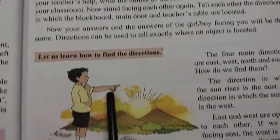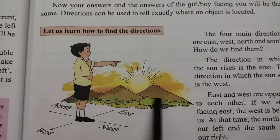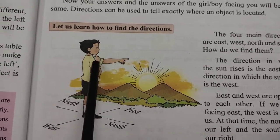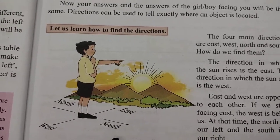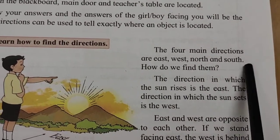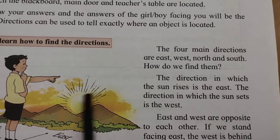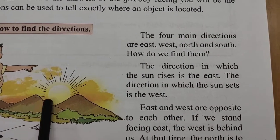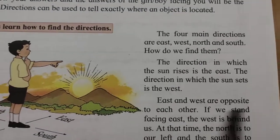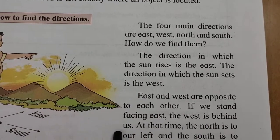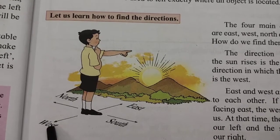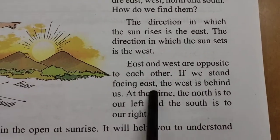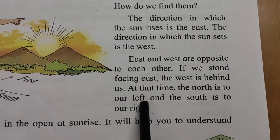In this picture, everybody knows that the Sun rises in the East and sets in the West. This is East; this is West. If we stand facing East, the West is behind us, North is to our left, and South is to our right. The directions in which the Sun rises is the East, and where it sets is the West — they are opposite to each other.